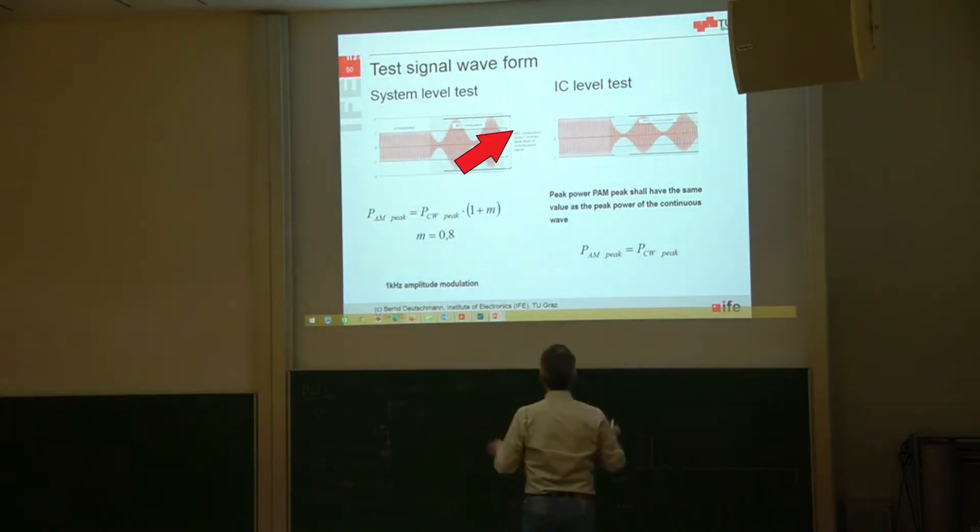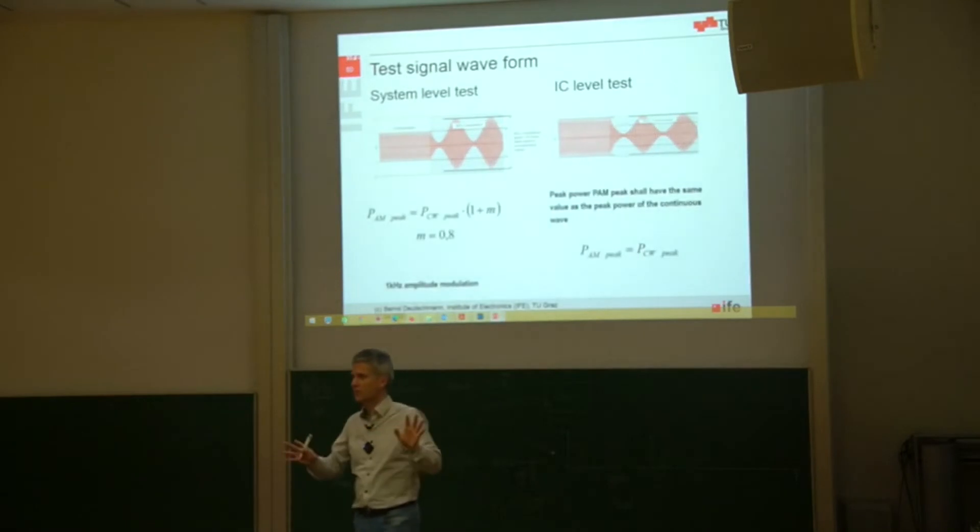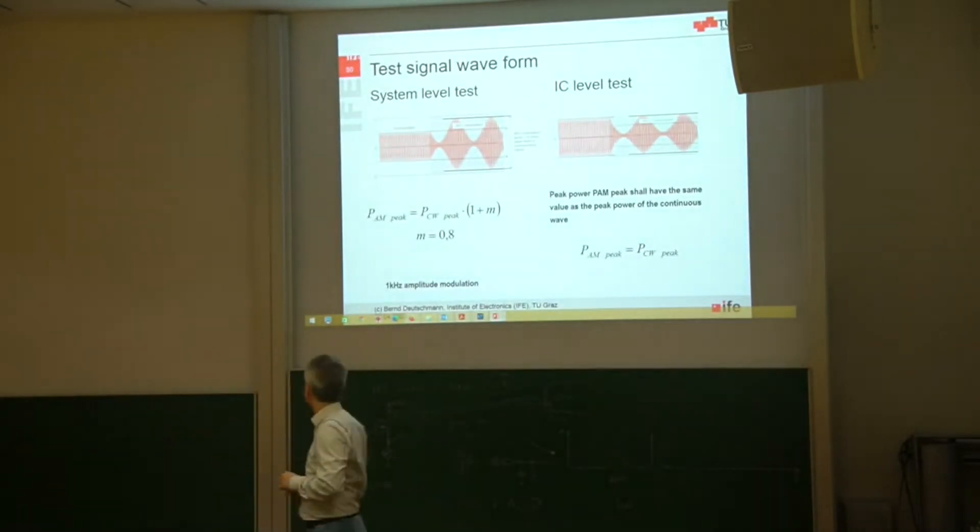At the IC level it's exactly the same, but the only difference is that it's not modulated up, so the peak-to-peak excursion, the maximum peak-to-peak excursion is then exactly the same as the peak-to-peak excursion from the continuous wave signal. Don't ask me why they have defined it in this way. I don't know.